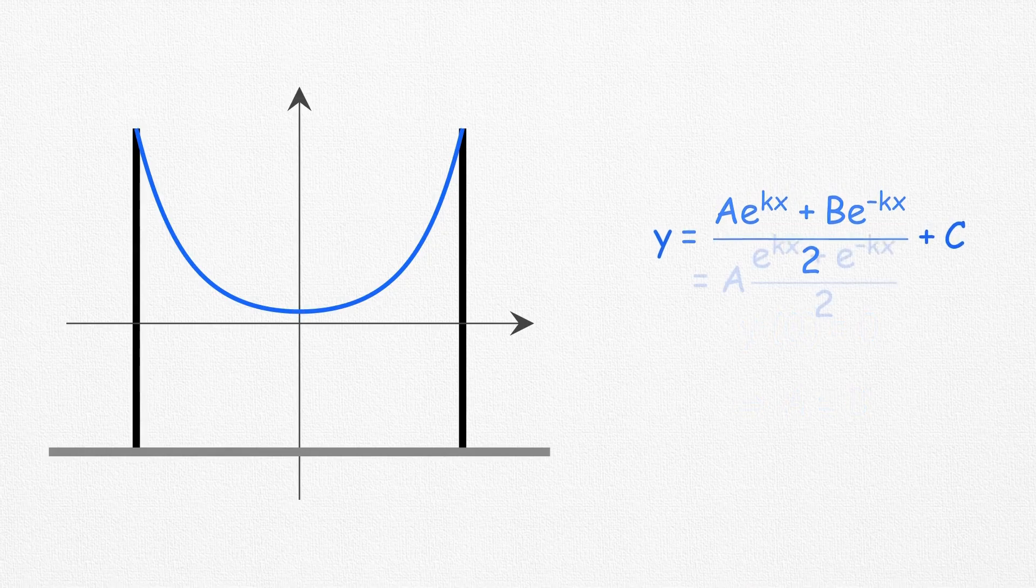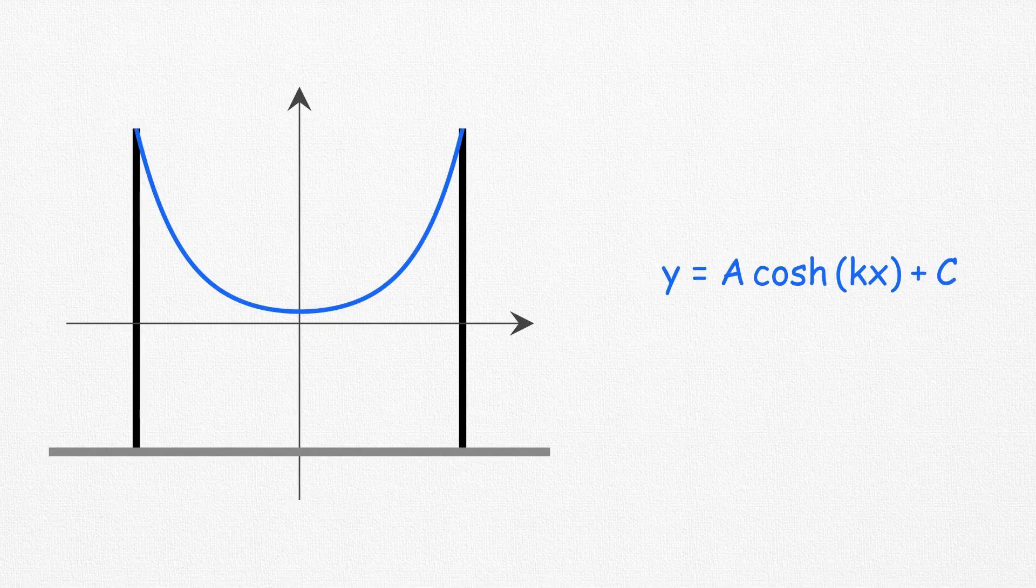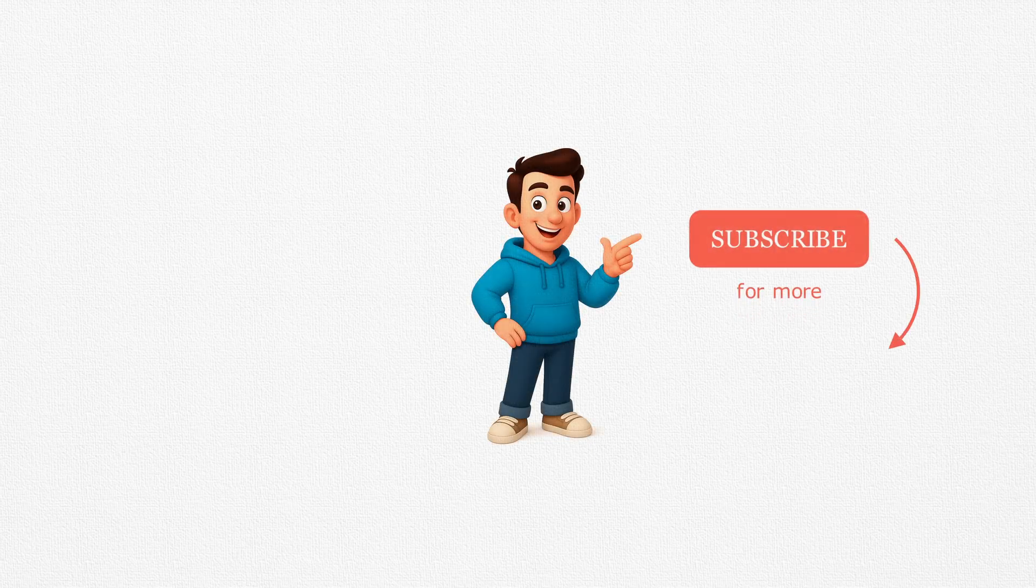Finally, the equation simplifies to an elegant exponential form, which can also be written as hyperbolic cosine function. The constants a and c can then be determined using the known coordinates of boundary points. And that's how we arrive at the beautiful equation of the catenary. Thanks for watching. If you enjoyed this video, don't forget to hit that subscribe button and join us for more exciting and interesting lessons just like this.